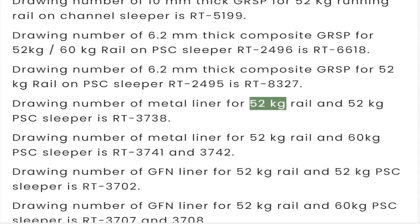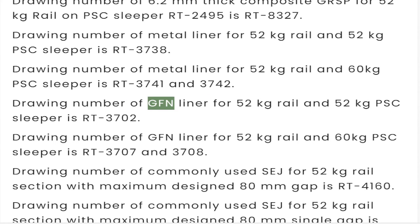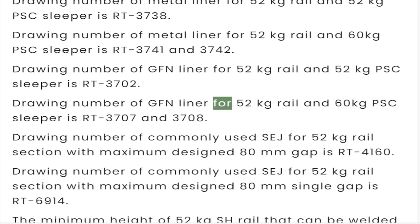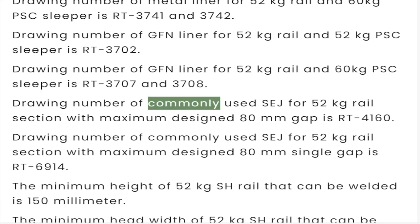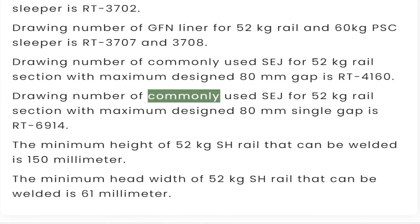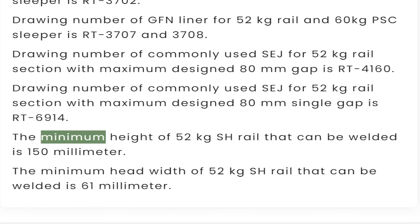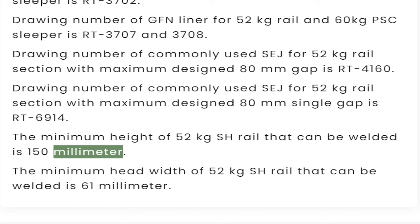Drawing number of metal liner for 52 kg rail and 52 kg PSC sleeper is RT3738. Drawing number of metal liner for 52 kg rail and 60 kg PSC sleeper is RT3741 and 3742. Drawing number of GFN liner for 52 kg rail and 52 kg PSC sleeper is RT3702. Drawing number of GFN liner for 52 kg rail and 60 kg PSC sleeper is RT3707 and 3708. Drawing number of commonly used gauge for 52 kg rail section with maximum designed 80 mm gap is RT4160, and with maximum single gap is RT6914. The minimum height of 52 kg SH rail that can be welded is 150 mm, and minimum head width is 61 mm.